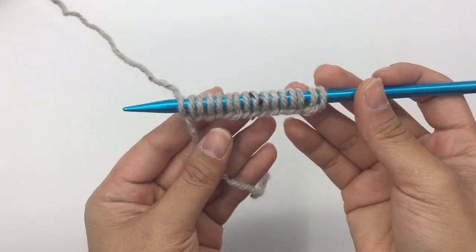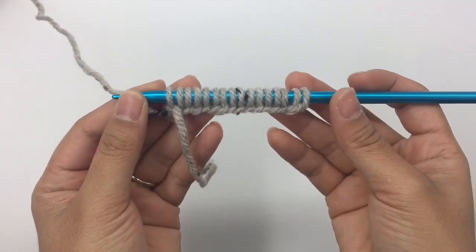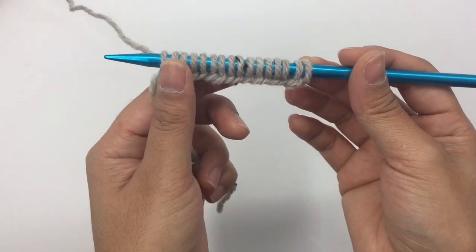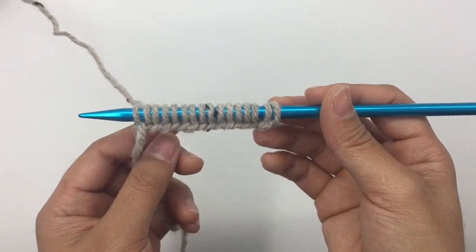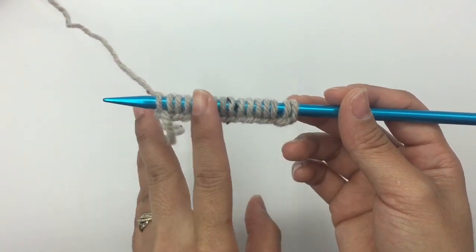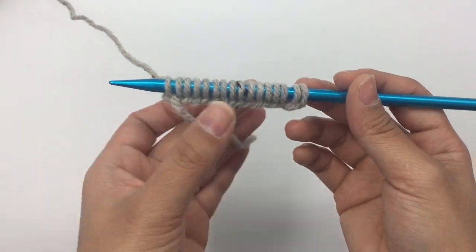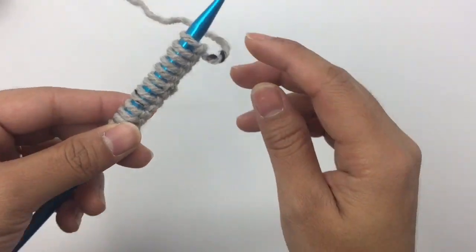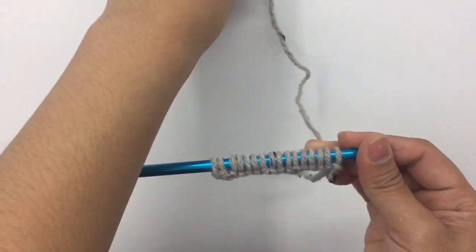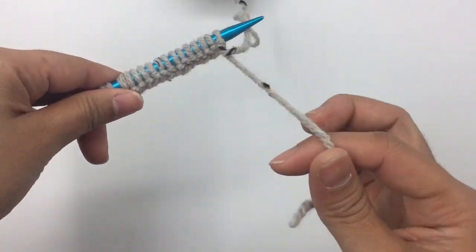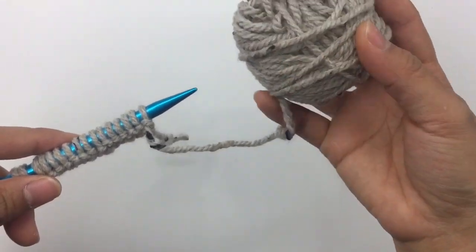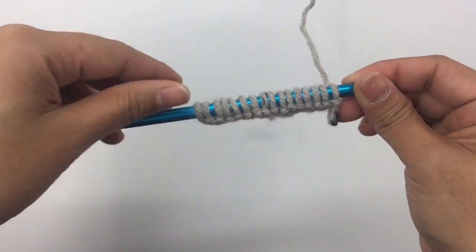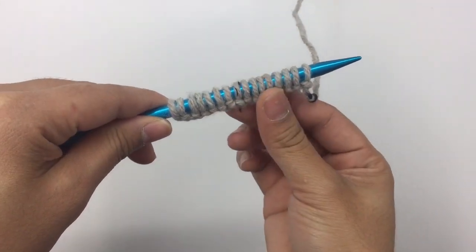In my last video, I showed you how to make a long tail cast on. If you don't know how, I'll put the link in the description below. After you make a long tail cast on, you're going to turn and we're going to knit from this side. For the tail, we're not going to work in that tail anymore. We're just going to work into the yarn that's attached to the ball.